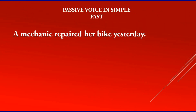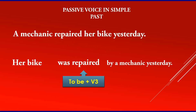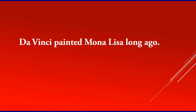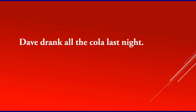'A mechanic repaired her bike yesterday.' Which one is the object? Her bike. What is the to-be? Was repaired. So: 'Her bike was repaired by a mechanic yesterday.' 'Da Vinci painted Mona Lisa long ago.' Which one is the object? Mona Lisa. So: 'Mona Lisa was painted by Da Vinci long ago.' 'Dave drank all the cola last night.' The object is all the cola. So: 'All the cola was drunk by Dave last night.'